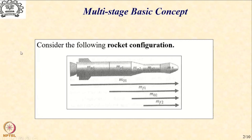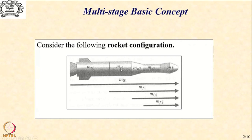MF1 contains the residual empty shell or the inert mass of stage 1 and then the remaining part of the rocket: stage 2, stage 3, etc., and the final payload stage called M star. Now, M02 is defined where we implement the idea discussed in the previous lecture — before starting the second stage, we get rid of the structural mass or inert mass of the first stage MS1, so that we have a smaller M02 compared to MF1. So M02 is nothing but MF1 minus MS1.